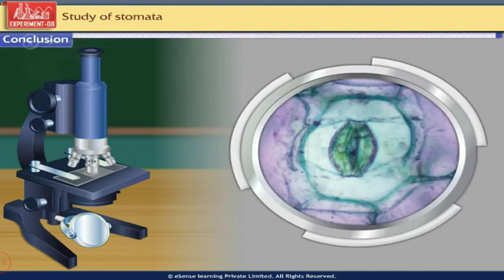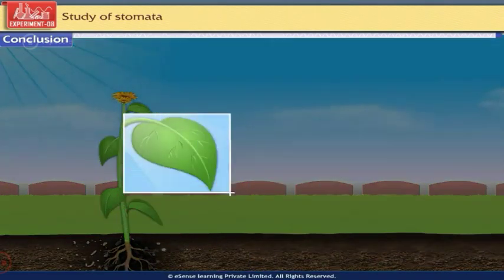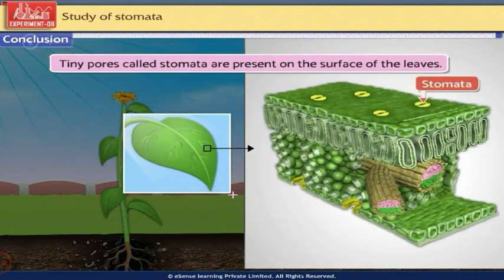Conclusion: Thus, after observing the temporary mount of leaf peel under the compound microscope, we can conclude that tiny pores called stomata are present on the surface of the leaves.